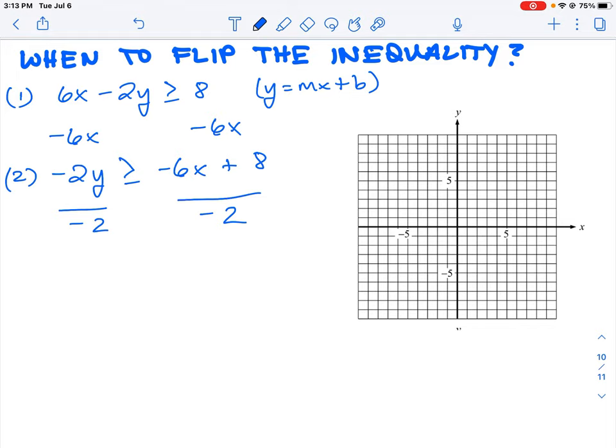That's going to remove that term and we'll be left with y by itself. Then we're going to have negative 6 divided by negative 2, which gives us 3x, and 8 divided by negative 2 gives us negative 4.